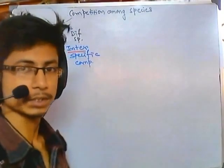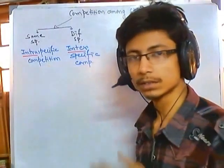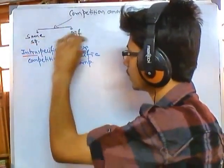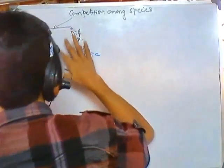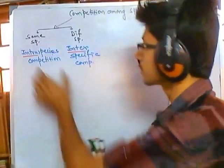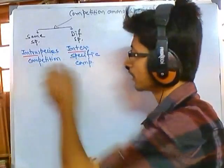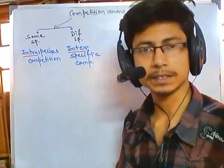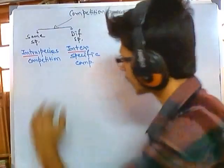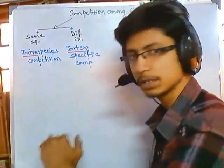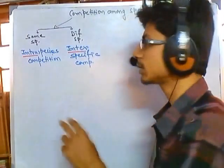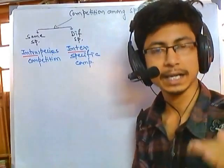Now let's think about where species competition occurs. In intraspecific competition — competition between the same species — let's say two plants of the same species, like two mango trees, are planted and growing side by side in the same area. As they grow, they will compete for nutrients from the soil and for sunlight.